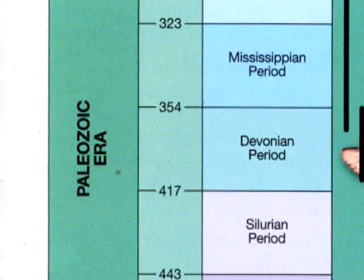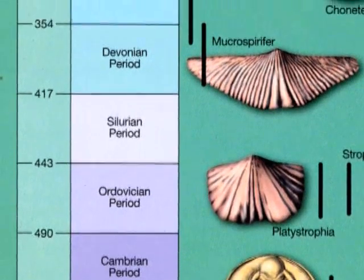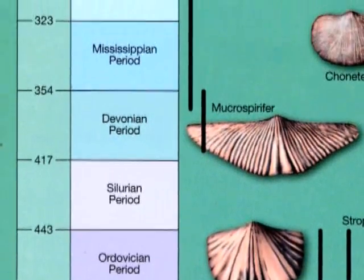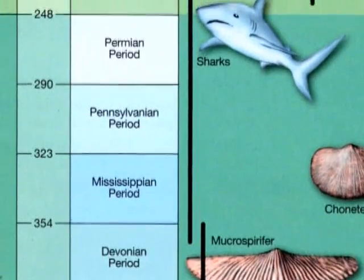Last week we looked at fossils — specifically what ancient life was during the Paleozoic Era, which was between about 535 to about 250 million years ago.